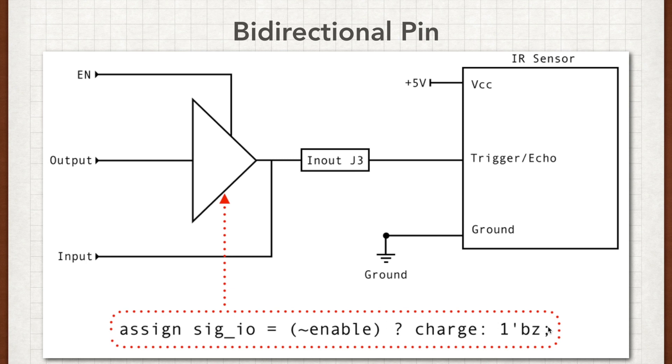This logic is right here. We'll see in the code here a little bit later how that kind of works, but basically you just have an enable pin, which either enables or disables this output. And then you're always listening on this other pin here, which is actually the same pin, but on this other line. So it's pretty easy here. If signal input output is equal to enable or not enable in this case, then you're going to assign signal IO to charge. Otherwise, you're going to assign signal IO to 1BZ, which is just the high impedance state.